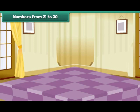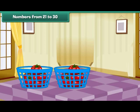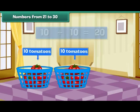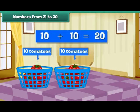Numbers from 21 to 30. Look at these two baskets of ripe tomatoes. Each basket contains ten tomatoes. Therefore, we have two groups of ten, which means we have 20 tomatoes.